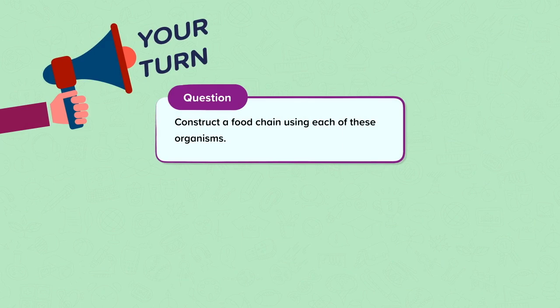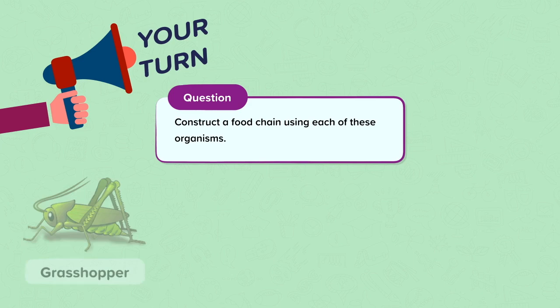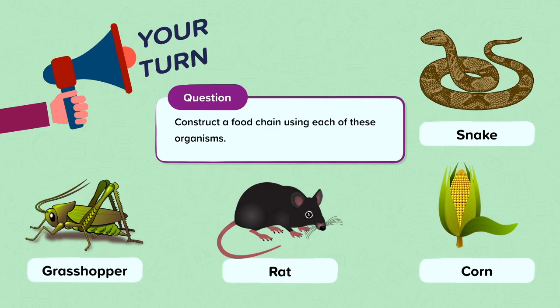Now it's your turn. Pause the video and have a go at drawing a food chain with the following animals. Label the producer and consumers in your food chain. We have a grasshopper, a rat, corn, and a snake.